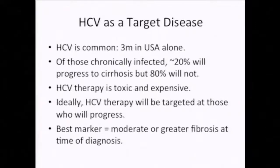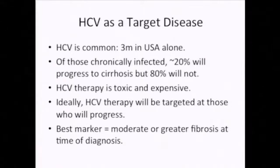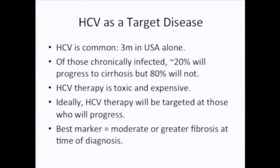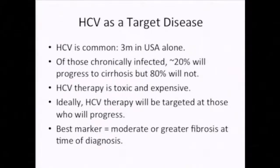Some facts about HCV that put it in context: the treatment for HCV is toxic and expensive. New drugs are currently going through the approval process — very expensive but less toxic. The well-validated regimen consists of about 24 to 40 weeks of subcutaneous interferon therapy, which is incredibly expensive. About 10% of patients develop major depression and can't finish the course, and about 2 to 3% of people on long-term interferon actually commit suicide because of major depressive disorder.